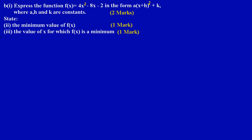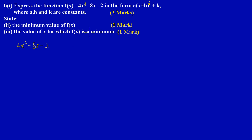Here in part B we are given f(x) = 4x² - 8x - 2 and we need to write it in the form a(x + h)² + k, where a, h, and k are constants. That's an easy two marks, so let's quickly get into it. Let's write down the function: 4x² - 8x - 2, and we need to convert it into that form.